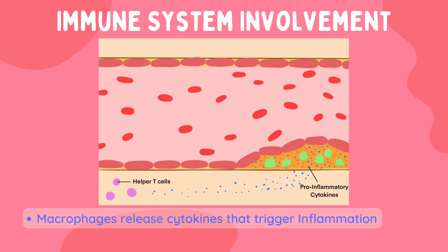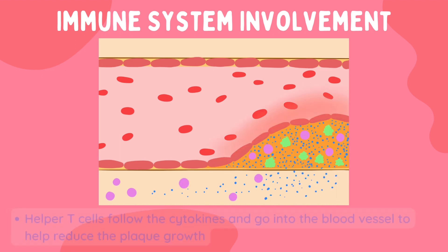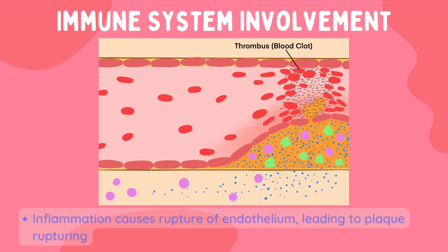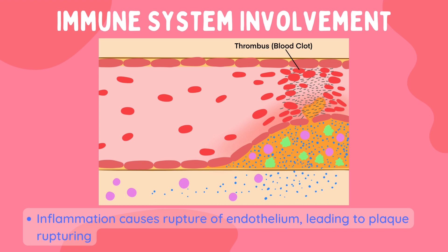These cytokines leave a trail of breadcrumbs for white blood cells to follow to reach the site of inflammation — in this case, the arterial endothelium. This is where the helper T cells come in. They enter into the blood vessels and help activate other immune cells that try to reduce the LDL accumulation. Additionally, T cells further increase the inflammation in the blood vessels.